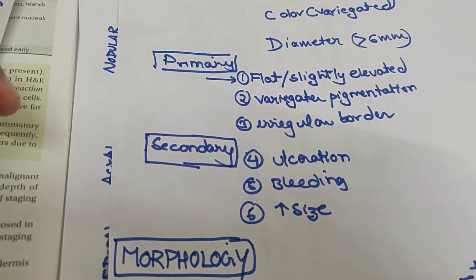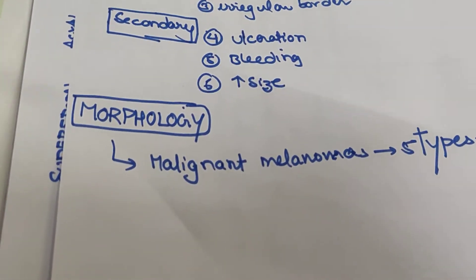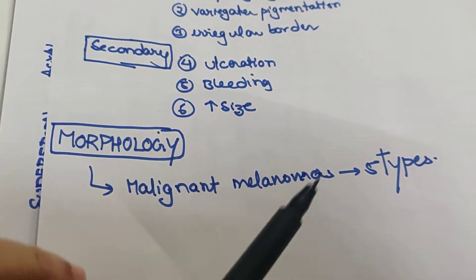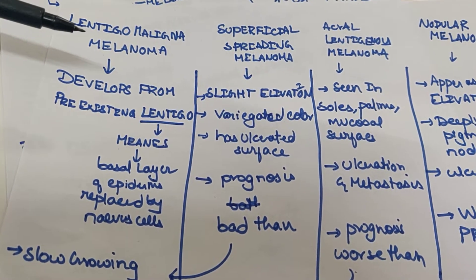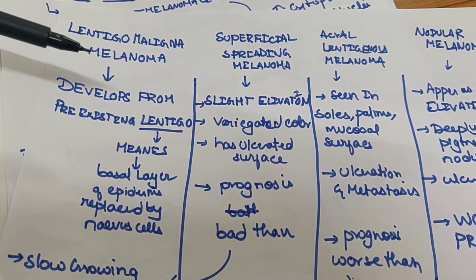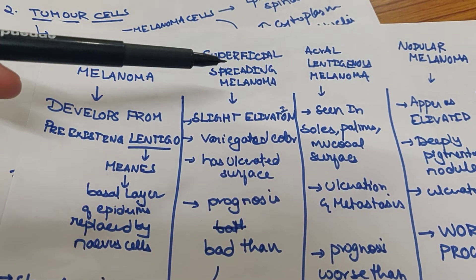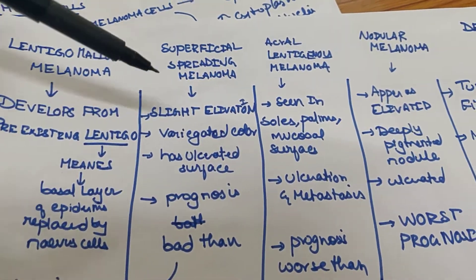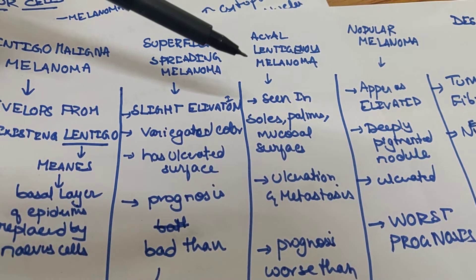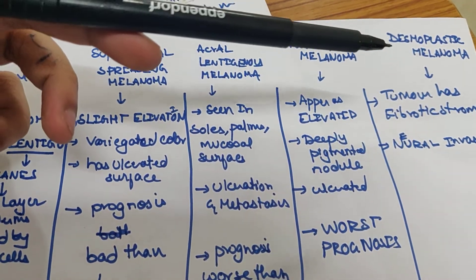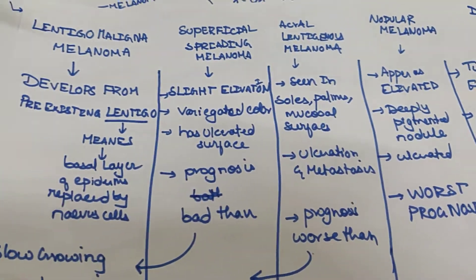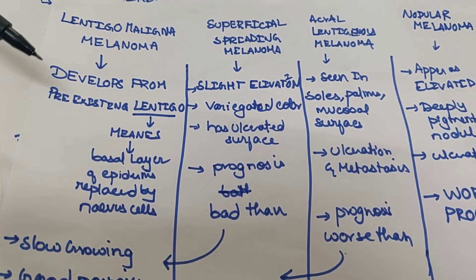Based on morphology, malignant melanomas are of five types: lentigo malignant melanoma, superficial spreading melanoma, acral lentiginous melanoma, nodular melanoma, and desmoplastic melanoma.